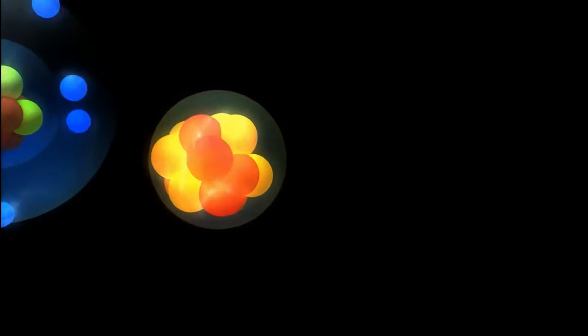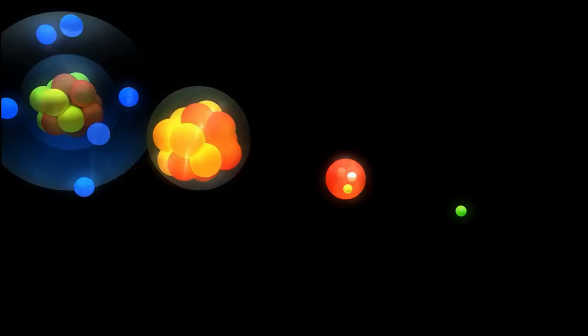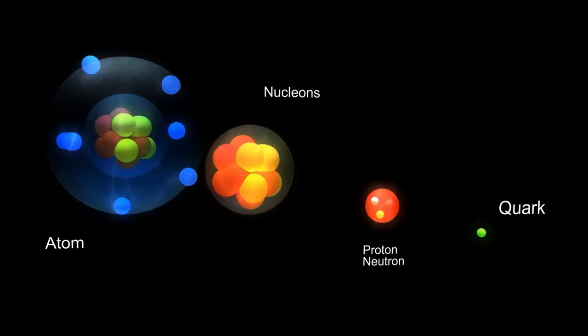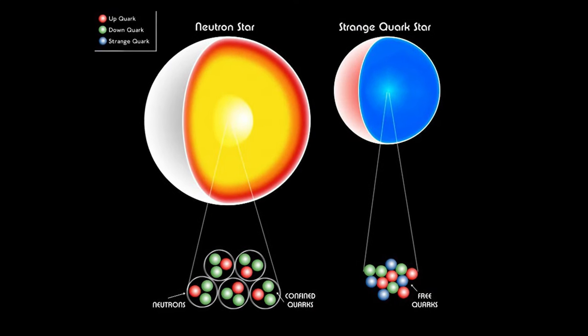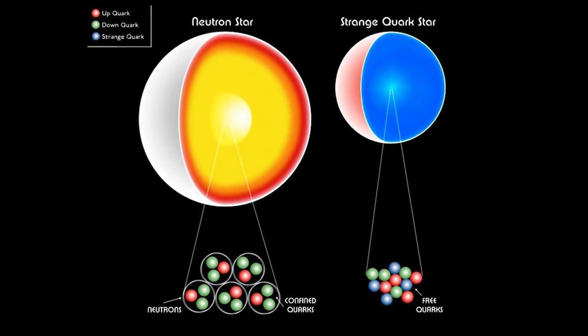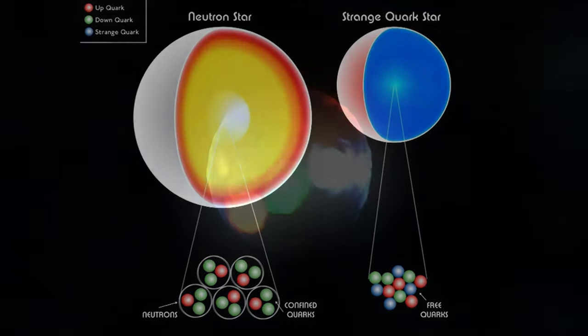Quark stars are theoretical objects that sit somewhere between the density of a neutron star and a black hole. They're made of quarks, an elementary particle that serves as a building block for matter by coming together to form the protons and neutrons in atomic nuclei. Similar to neutron stars, which are made up of neutrons, quark stars would be made almost entirely of quarks.